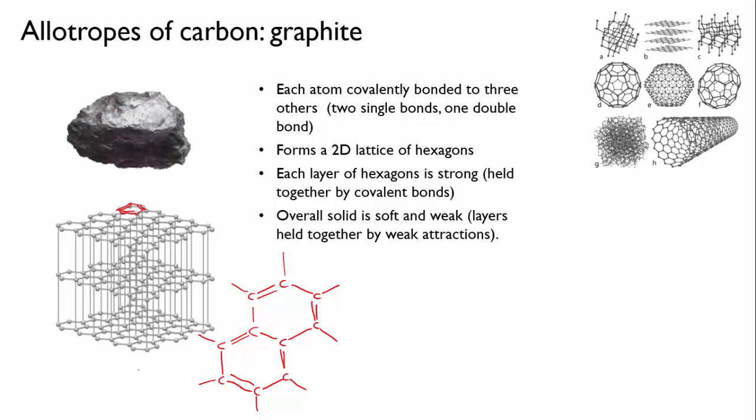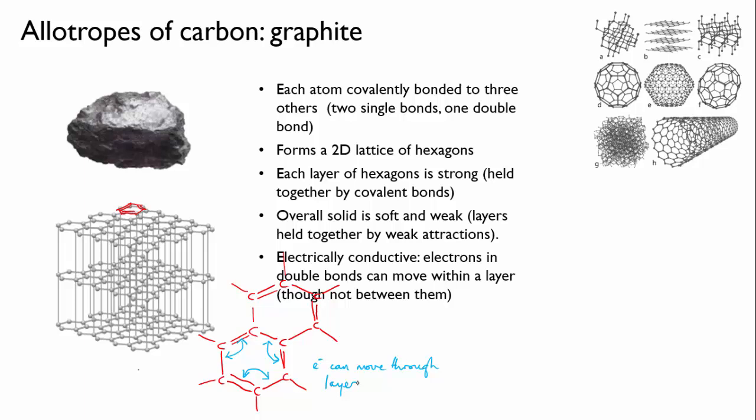In addition, there's something else about this bonding arrangement that gives graphite special properties. The pattern of single and double bonds in graphite is not fixed but can alternate so that single becomes double and double becomes single. This means that the extra electrons that form these alternating single and double bonds are essentially able to move through the 2D lattice and that means that graphite is conductive.